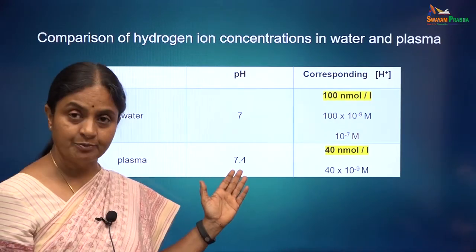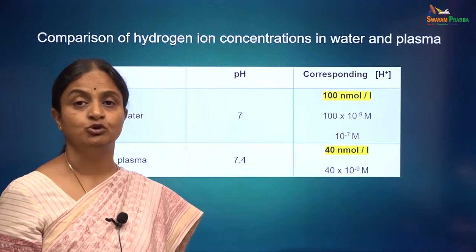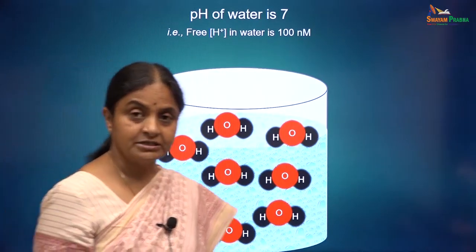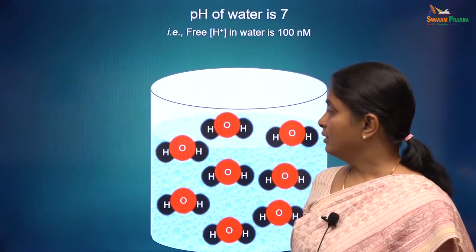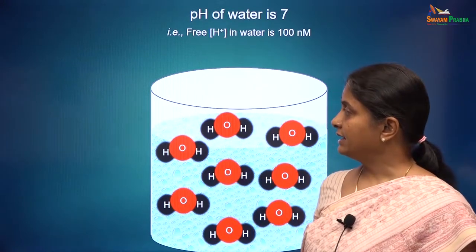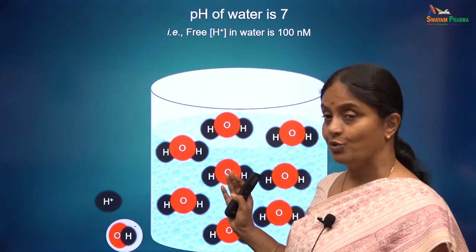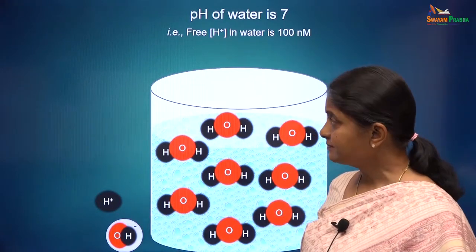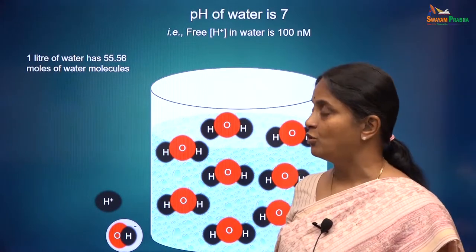Plasma has a pH of 7.4 and the free hydrogen ion concentration is 40 nanomoles per liter. Now let us look at water equilibrium. These are stable water molecules — H2O molecules. Let us see how many stable water molecules there are in a liter of water and how many of those are ionized. A liter of water will have 55.56 moles of water molecules.